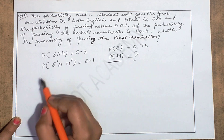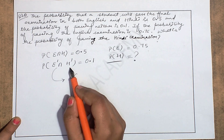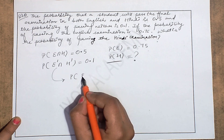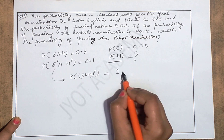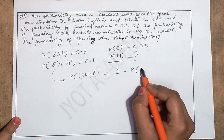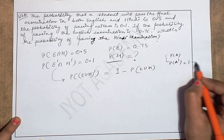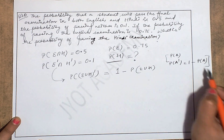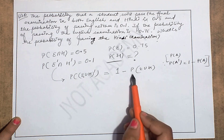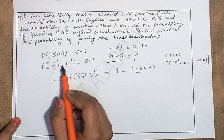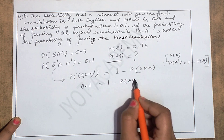First step: simplify P(E' ∩ H'). By De Morgan's Law, this becomes P(E ∪ H)' which equals 1 − P(E ∪ H). Since P(E' ∩ H') = 0.1, we get 1 − P(E ∪ H) = 0.1. So P(E ∪ H) = 0.9.